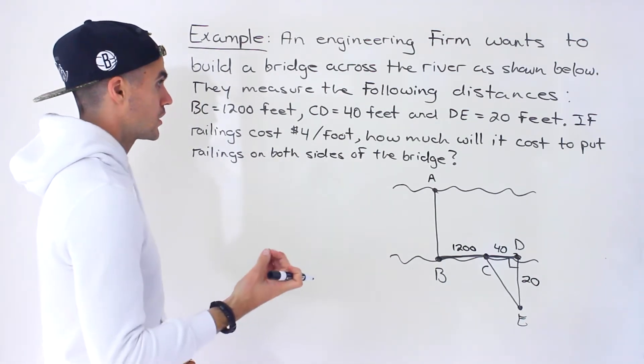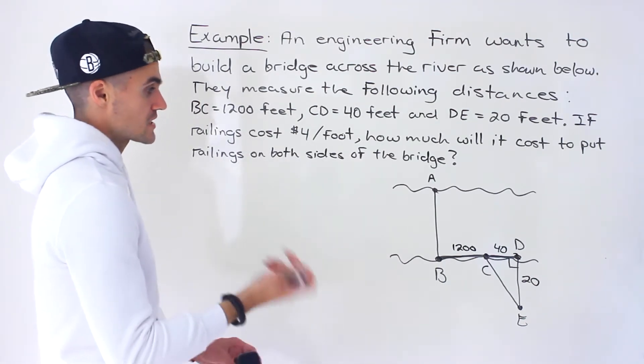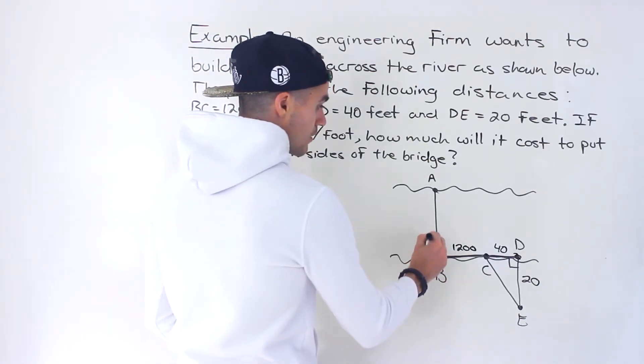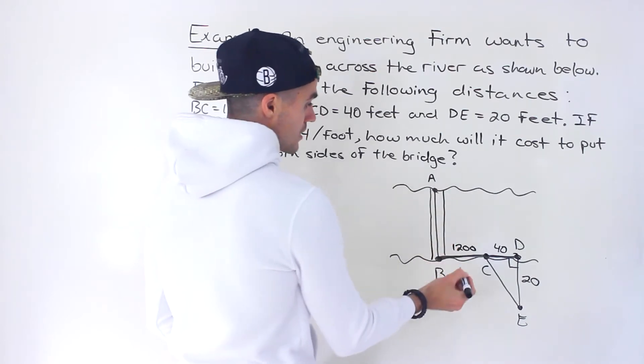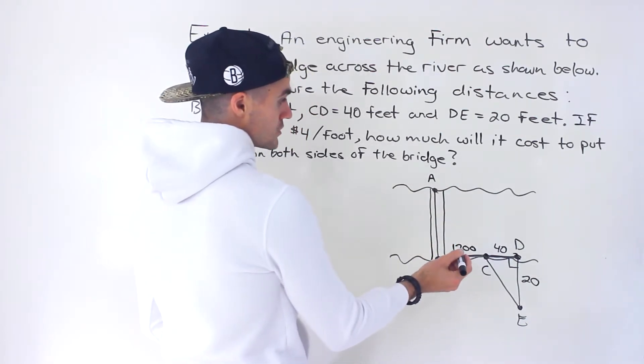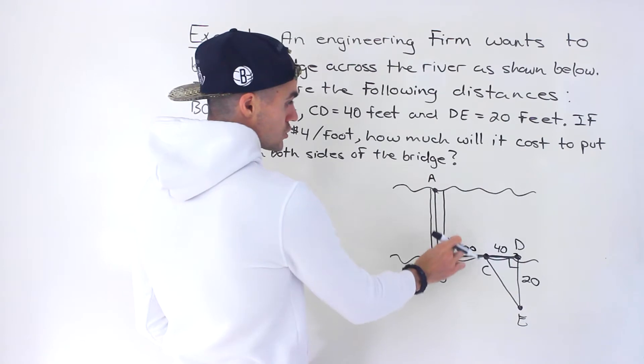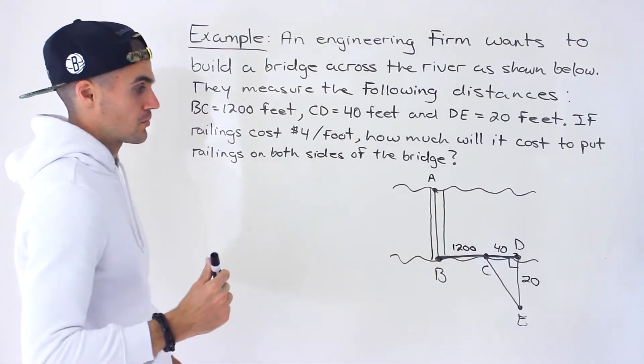If the railings cost four dollars per foot, how much will it cost to put railings on both sides of the bridge? They're going to put railings on this side of the bridge and also on this side of the bridge. Each of these railings costs four dollars per foot.